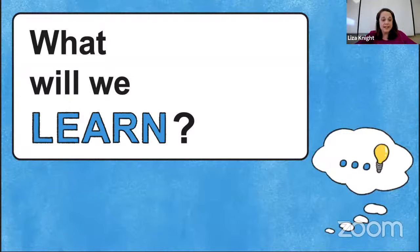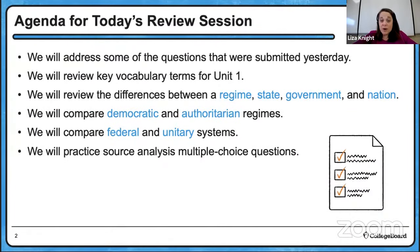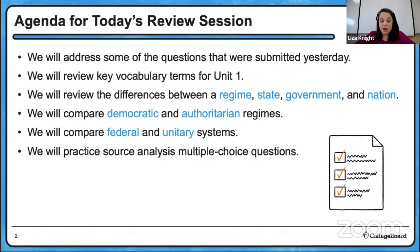So what are we going to learn today? Let's start by talking about our agenda for the 45 minutes we have together. First, we're going to address some of the questions you submitted yesterday. We're going to focus on unit one today and review key vocabulary — especially the differences between a regime, a state, a government, and a nation — as well as differences between democratic and authoritarian regimes and federal and unitary systems. We'll end with some practice source analysis multiple choice questions: one quantitative and one text-based qualitative.